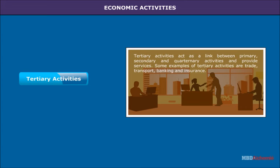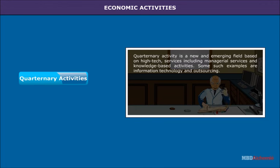Tertiary activities act as a link between primary, secondary and quaternary activities and provide services. Some examples of tertiary activities are trade, transport, banking and insurance. Quaternary activity is a new and emerging field based on high-tech services including managerial services and knowledge-based activities, such as information technology and outsourcing.